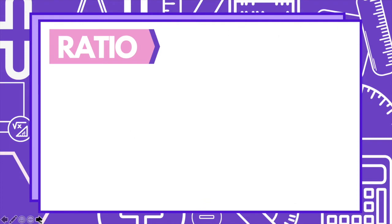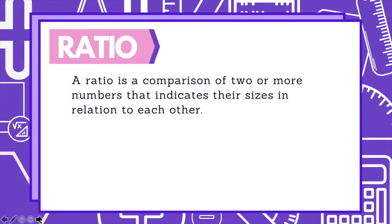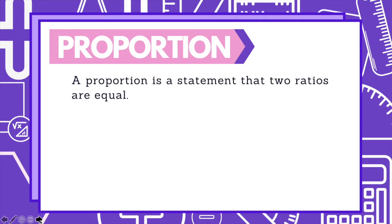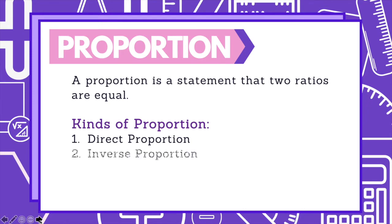Let us first define what a ratio is. A ratio is basically a comparison of two or more numbers that indicates their sizes in relation to each other. When you equate two ratios, you now have what we call a proportion — a statement that two ratios are equal. A proportion has three types: direct proportion, inverse proportion, and partitive proportion.